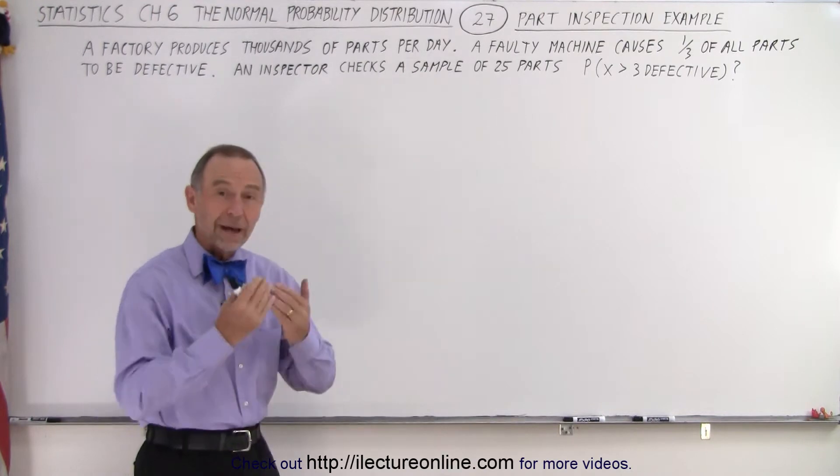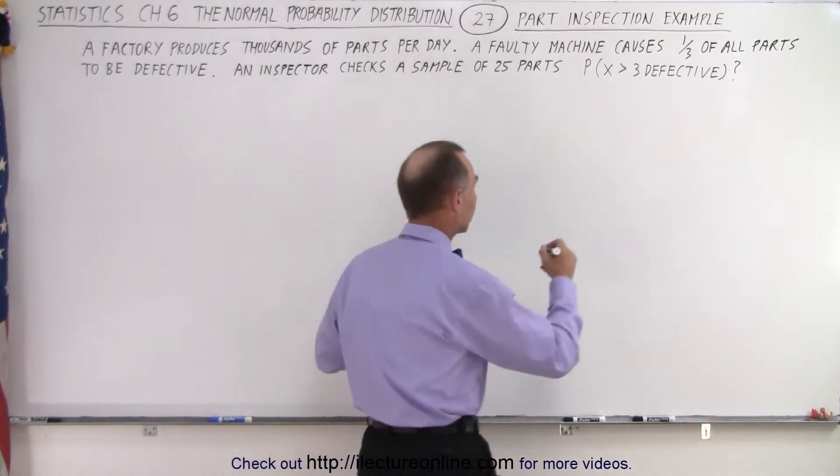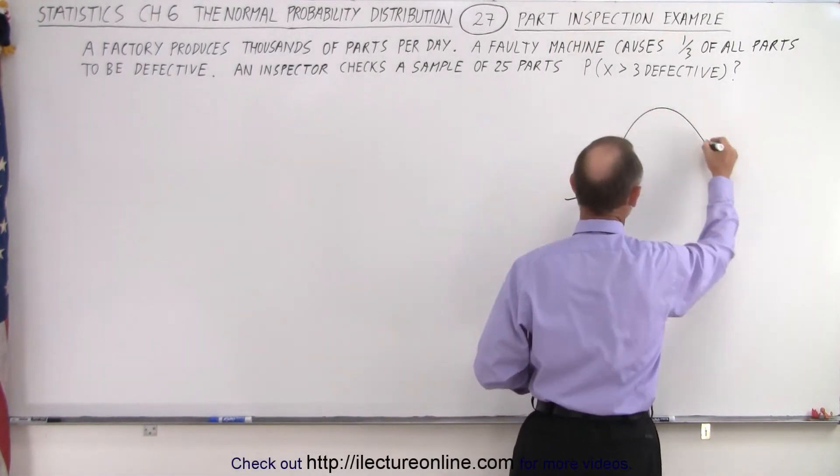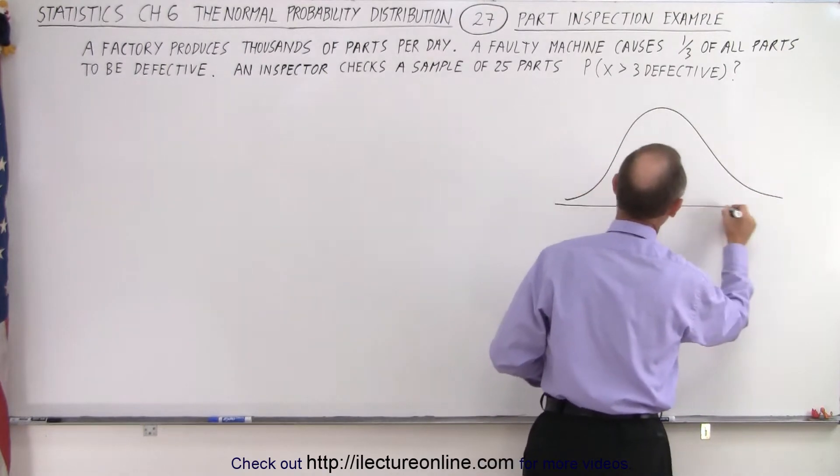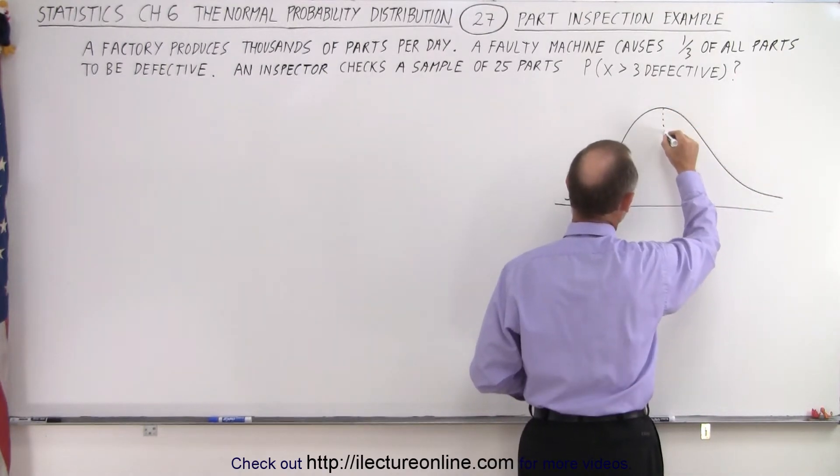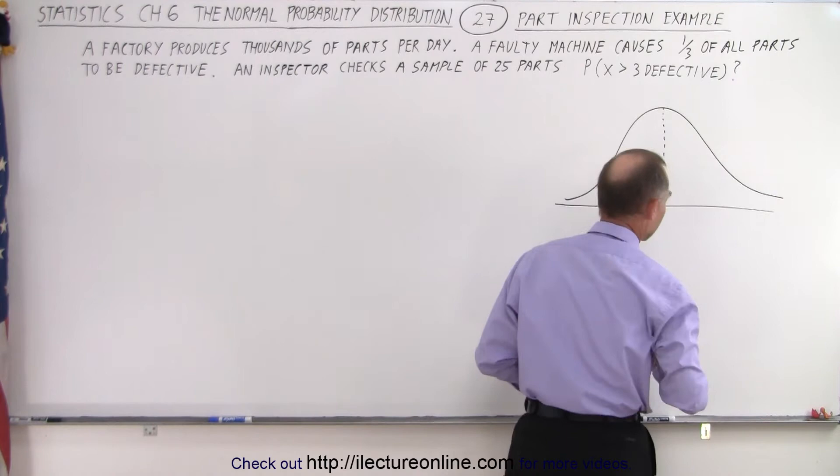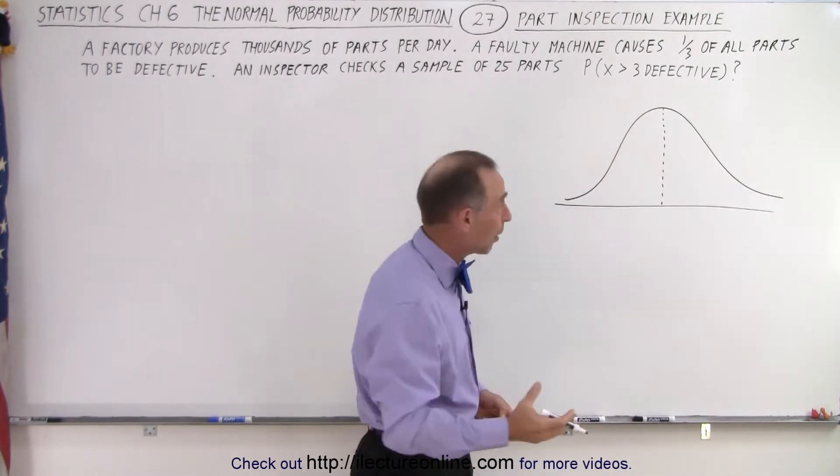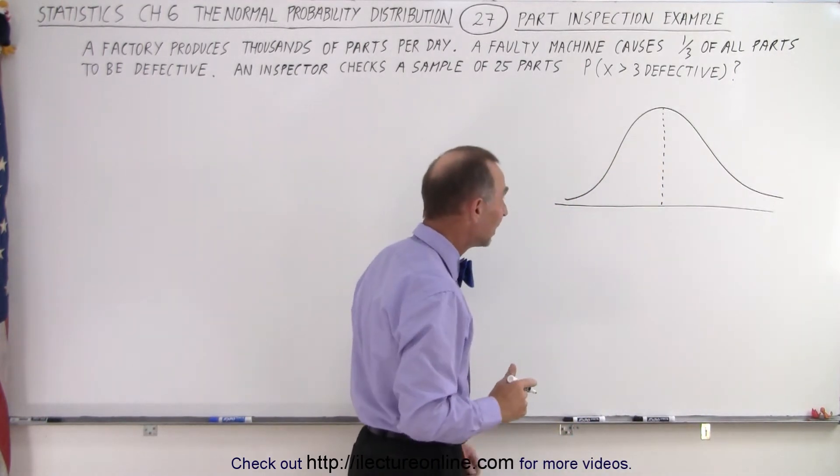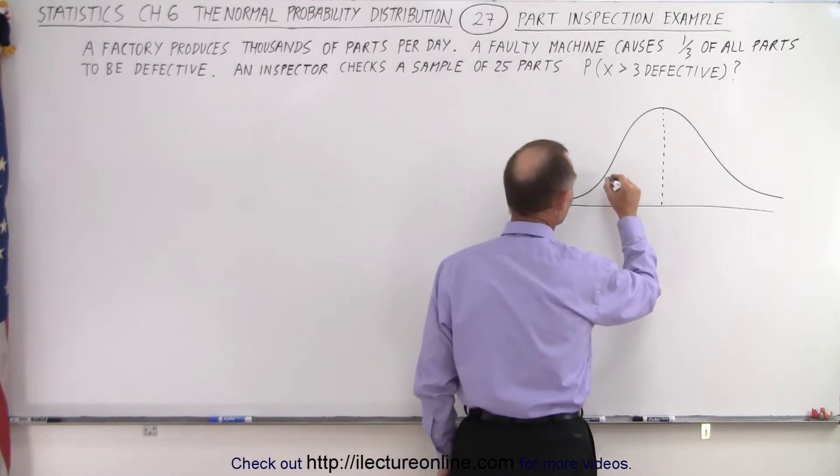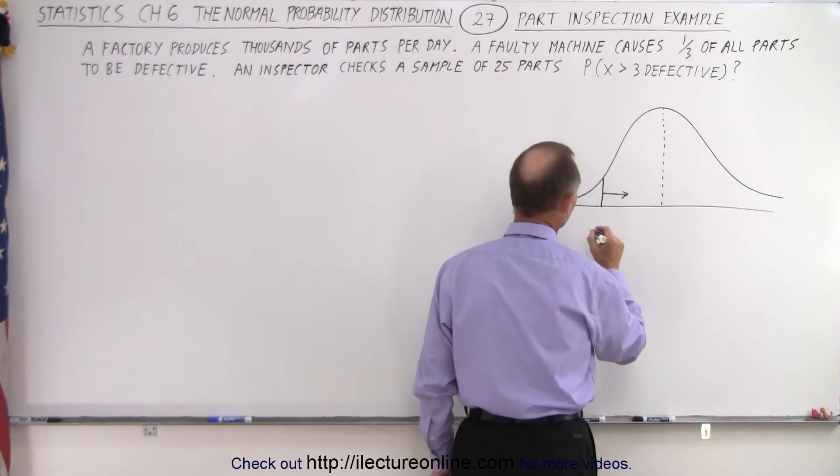So what we're going to assume is that we have a normal distribution. So here's our normal distribution, and what we need to do is we need to find the mean, the mean meaning the number of defective parts out of 25, and then we want to find what the probability is that more than three will be defective.